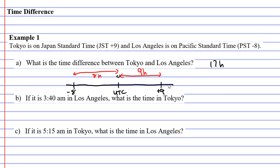Now we're going to look at question B, which says, if it is 3:40 AM in Los Angeles, what is the time in Tokyo? And what's important here is to figure out, are we adding the time, or are we subtracting it? Because Tokyo has a +9 and Los Angeles has a -8, that tells me that Tokyo is going to be ahead of Los Angeles. So we're going to add the time on.